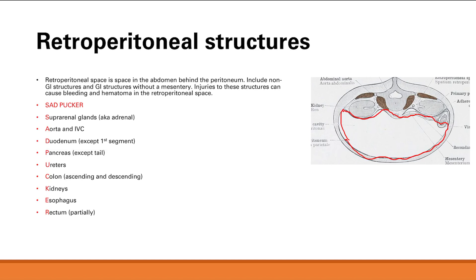The retroperitoneum contains both non-GI structures as well as GI structures without a mesentery. The significance of these structures is that if you injure them, you can get bleeding or a hematoma — which is a blood clot — in that space behind the peritoneum. There's a nice mnemonic to remember all the retroperitoneal structures: it's called SAD PUCKER.